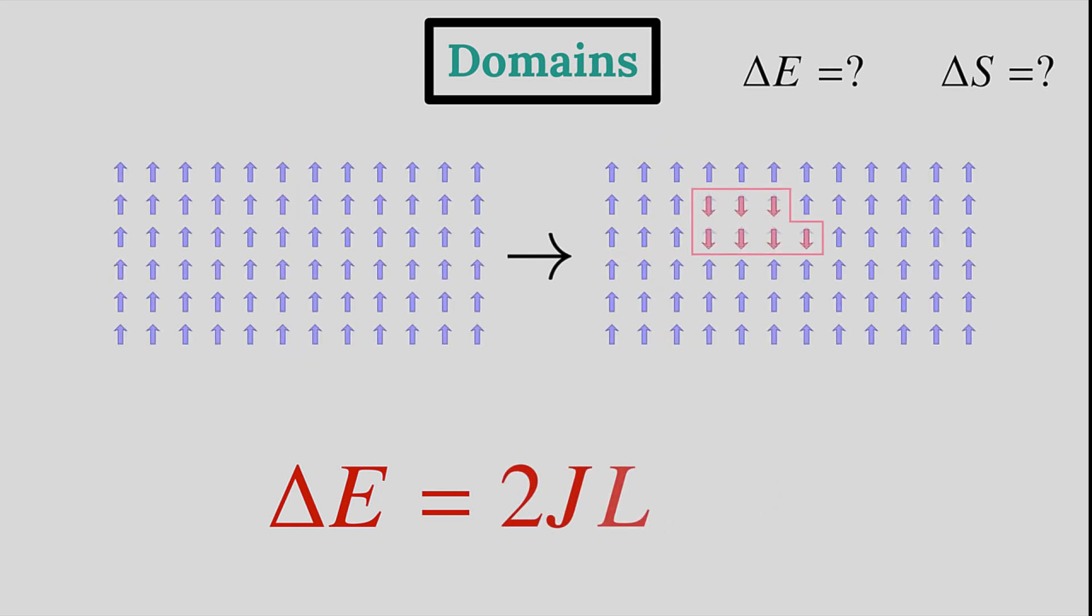So this means that the total change in energy caused by the creation of a domain of perimeter L is 2J times L. We have now found delta E.